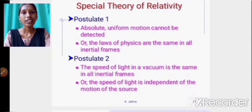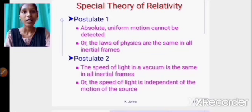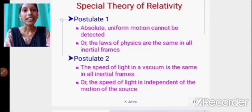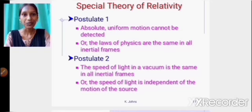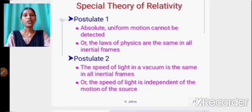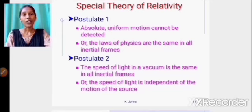The special theory of relativity rests on two postulates. Postulate one: absolute uniform motion cannot be detected, or equivalently, the laws of physics are the same in all inertial frames. Postulate two: the speed of light in vacuum is the same in all inertial frames, or the speed of light is independent of the motion of the source.